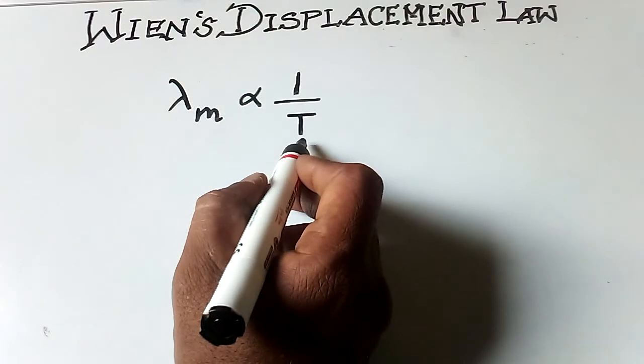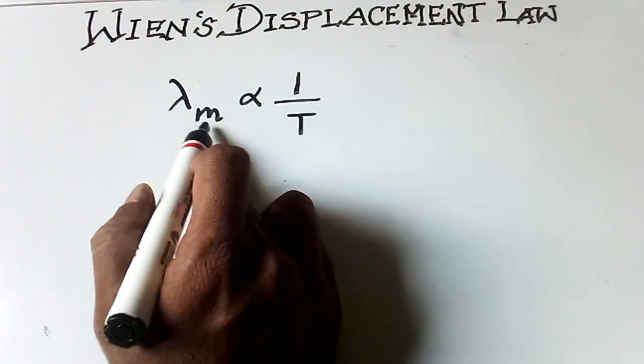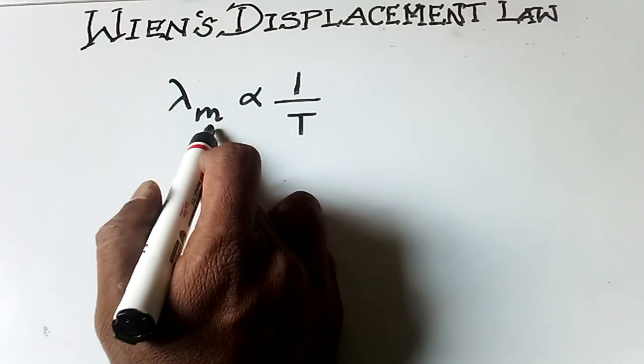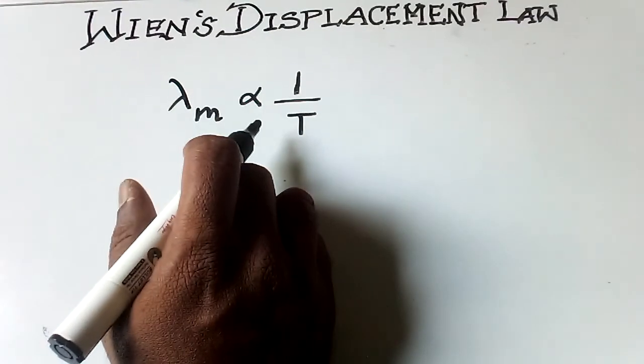Where T is the absolute temperature of the black body, and lambda m is the wavelength of maximum density of emission of a black body.